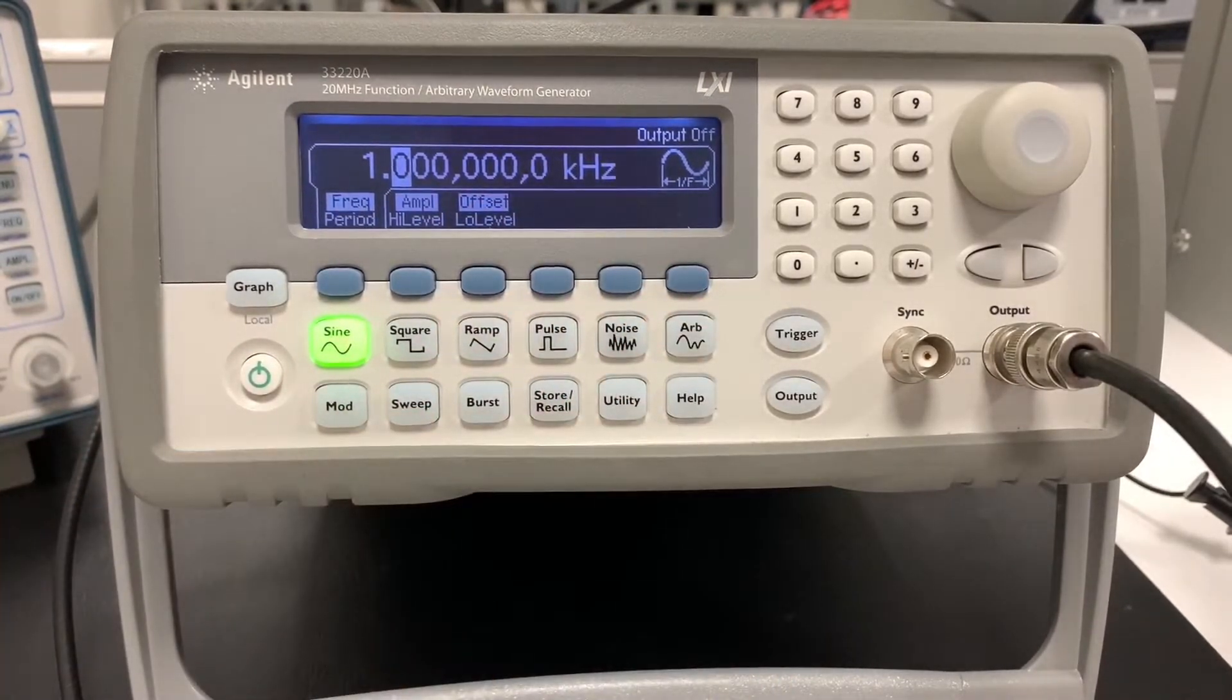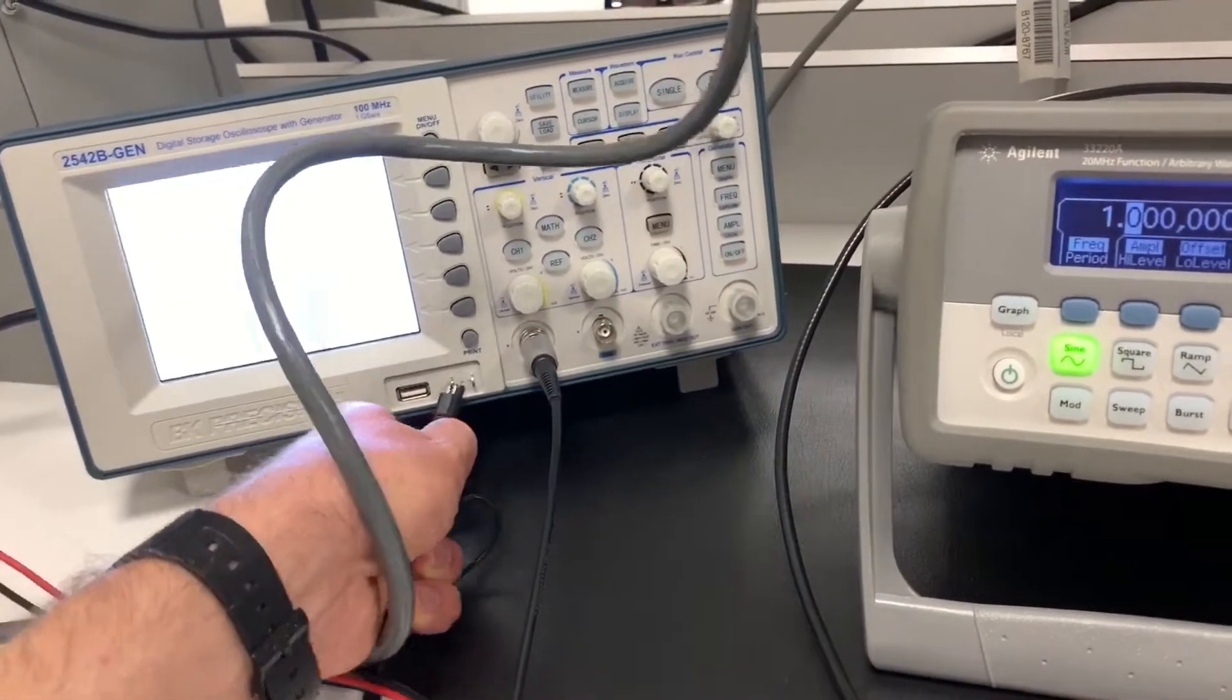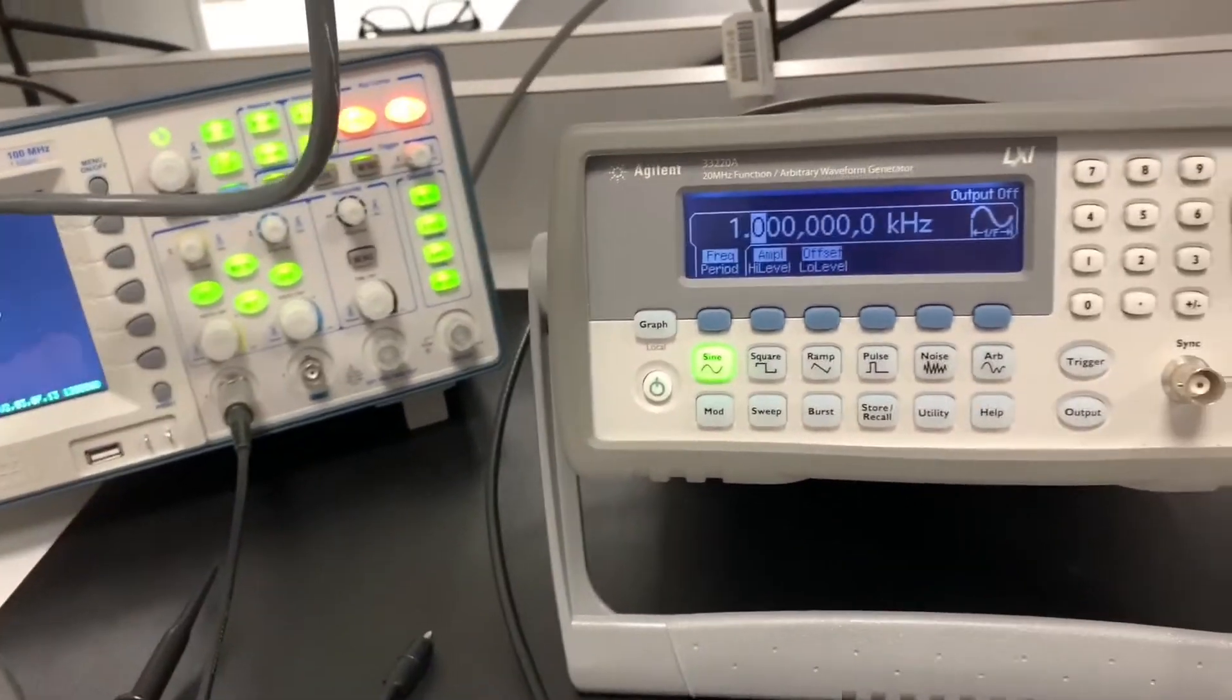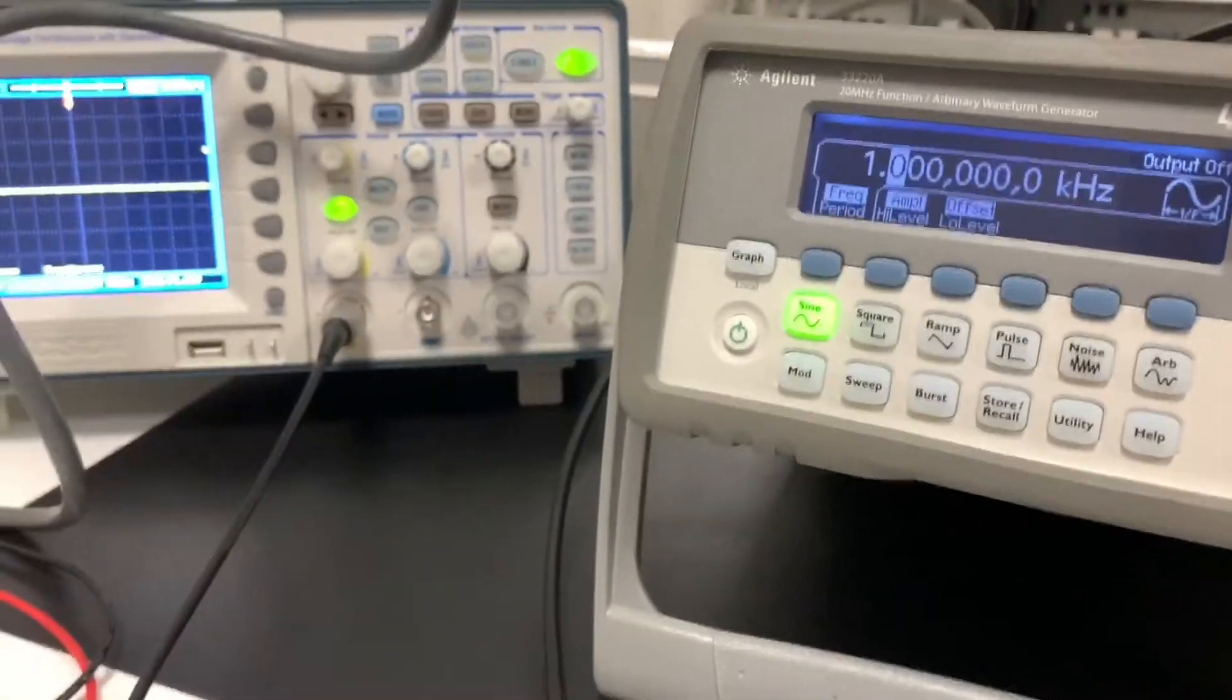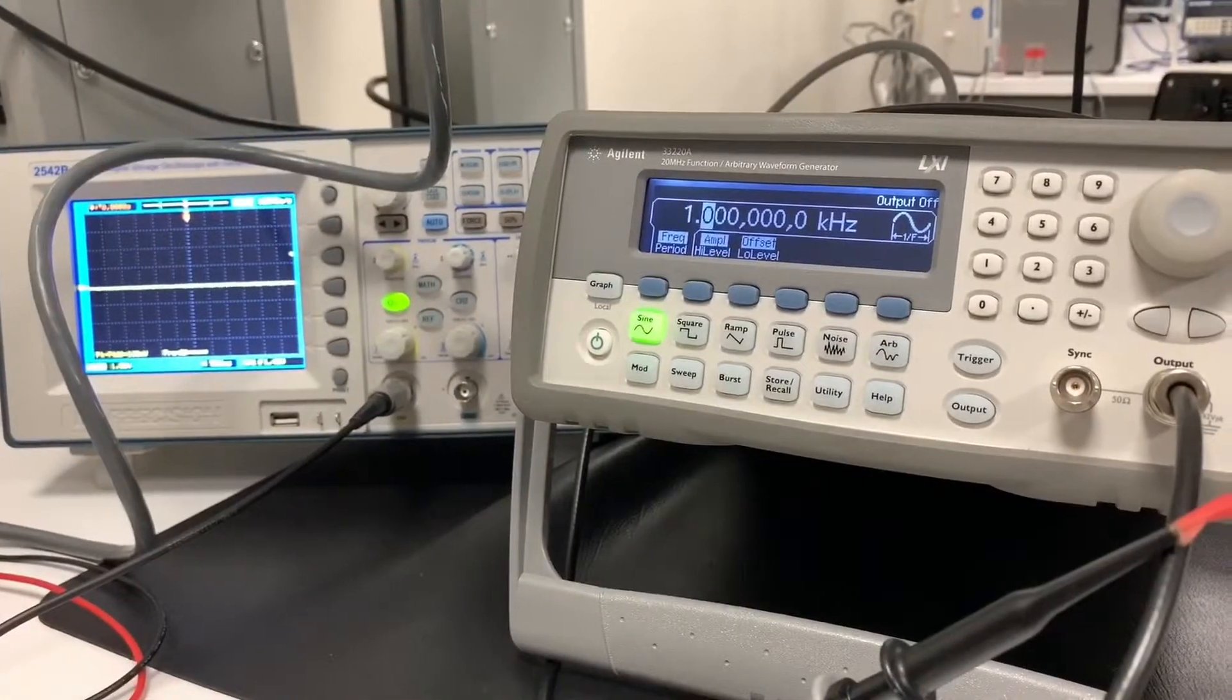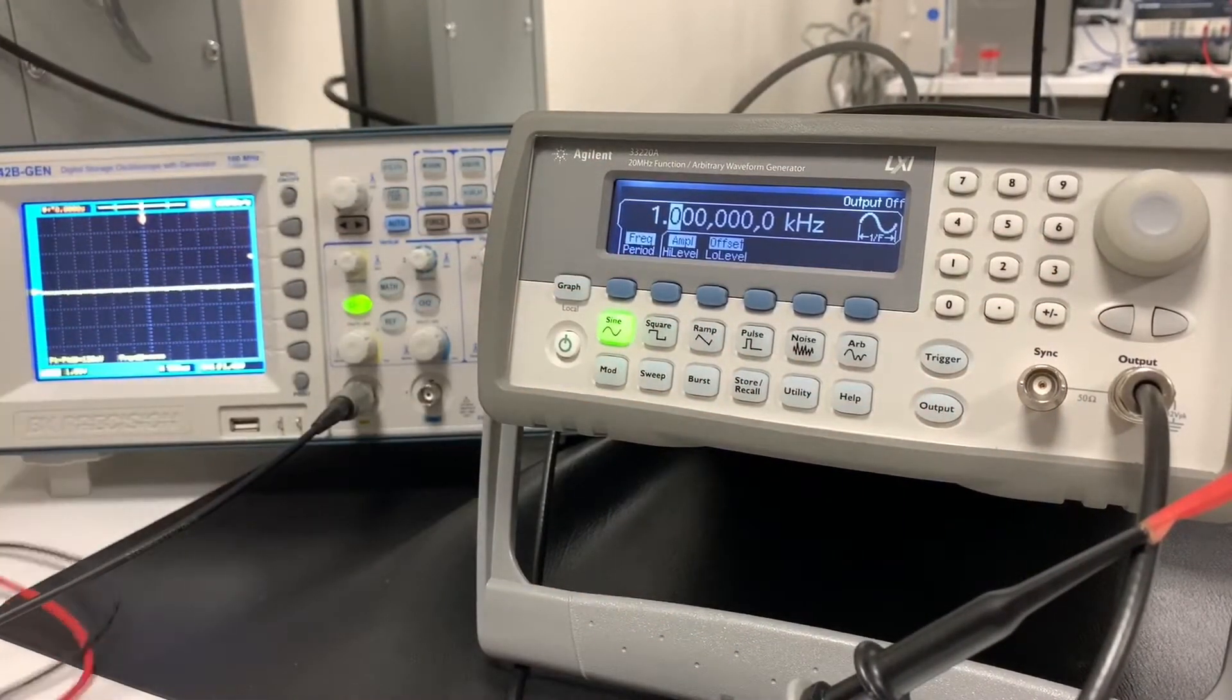What I'll do now is I'll take the oscilloscope over here that we were using before, and I will hook it up to the output of this function generator so we can see what's going on. Now I have the output of this function generator hooked up to the input of this oscilloscope.